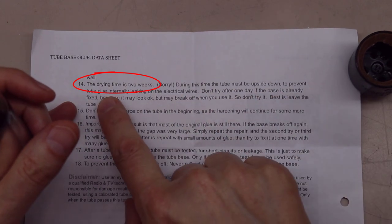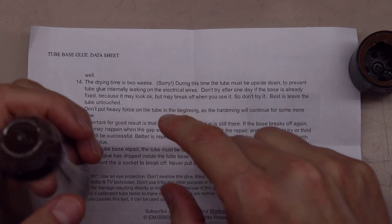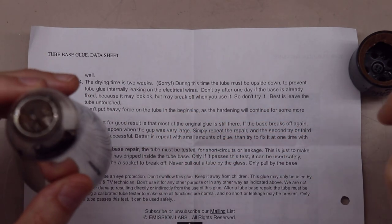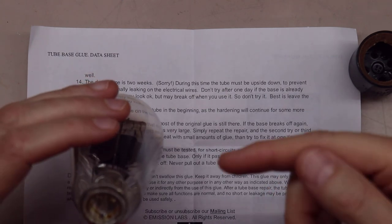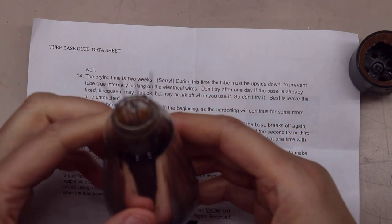Sorry, during this time, the tube must be upside down to keep the tube glue internally from leaking on the electrical wires. So that is interesting. Two weeks for full dry on this, but hey, this thing's been sitting out in the barn for years and I'm just glad to be getting it fixed.